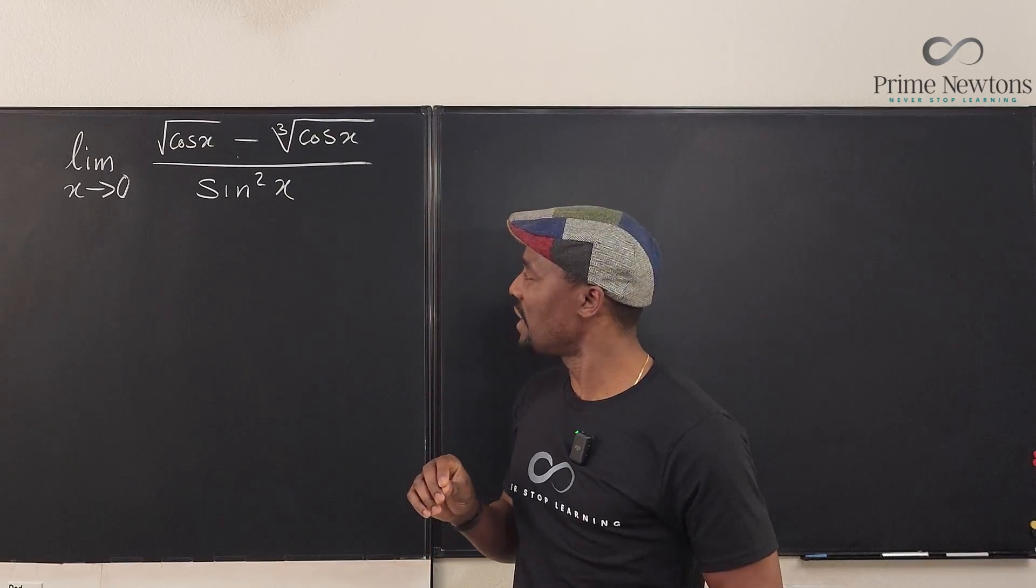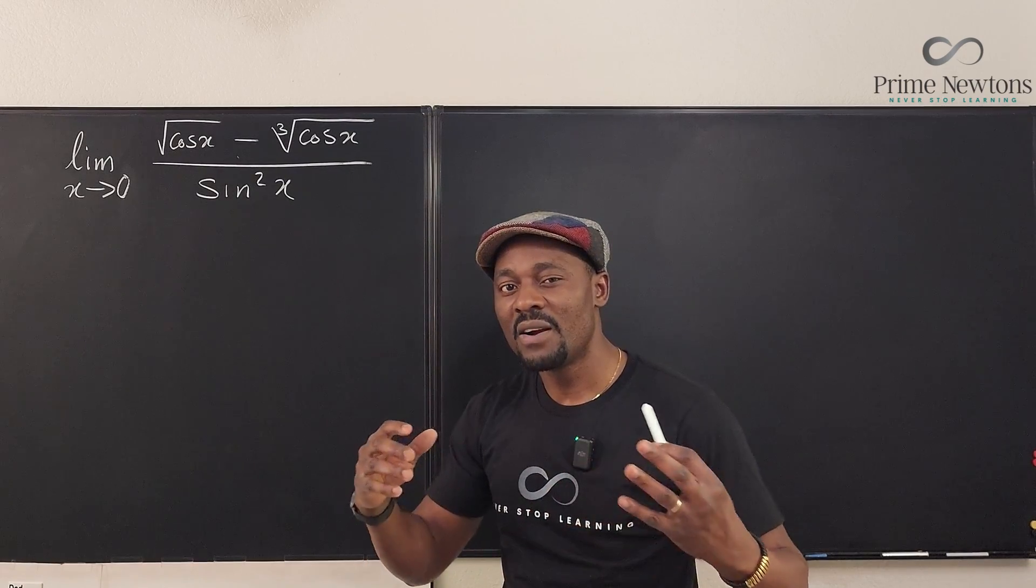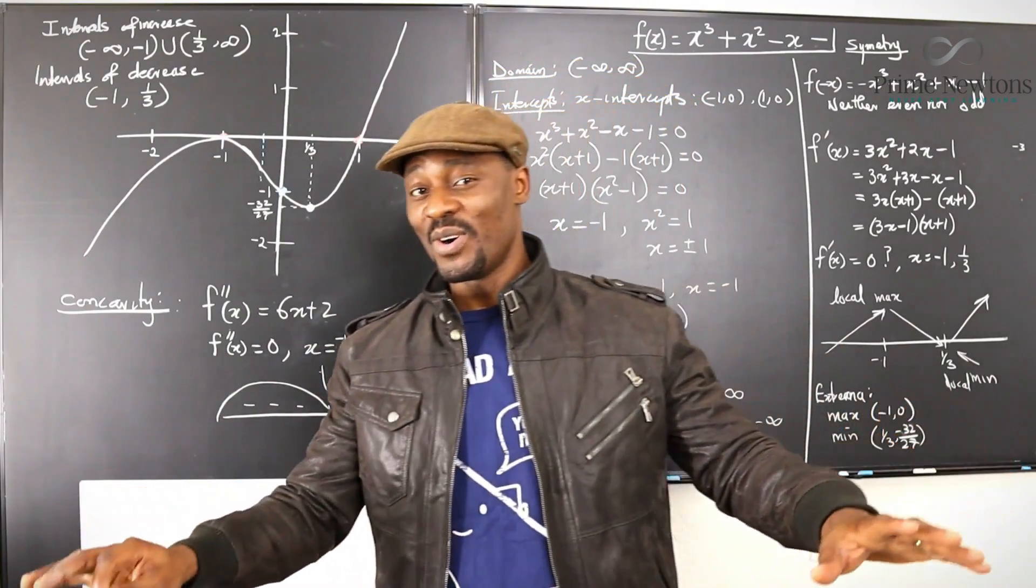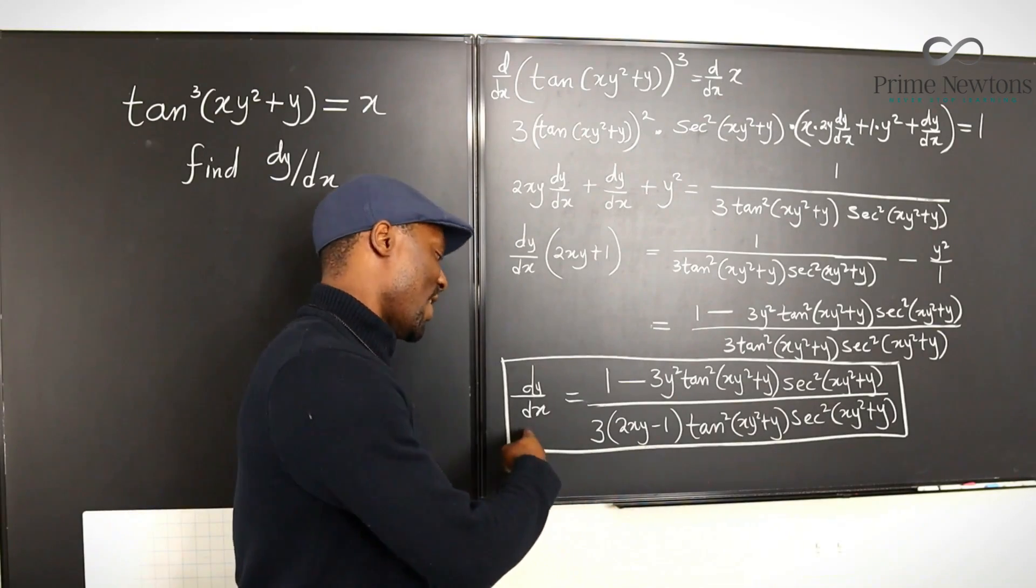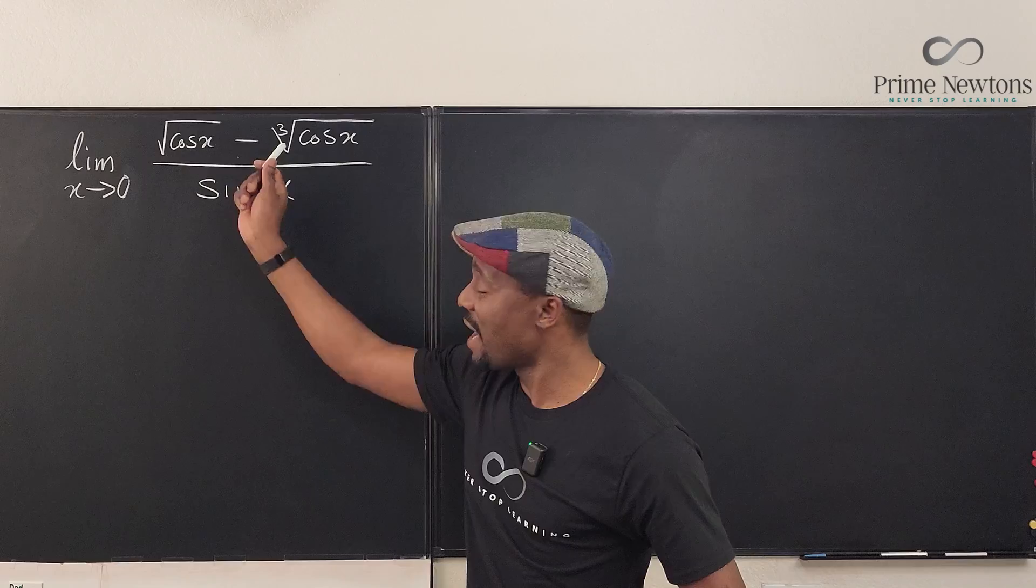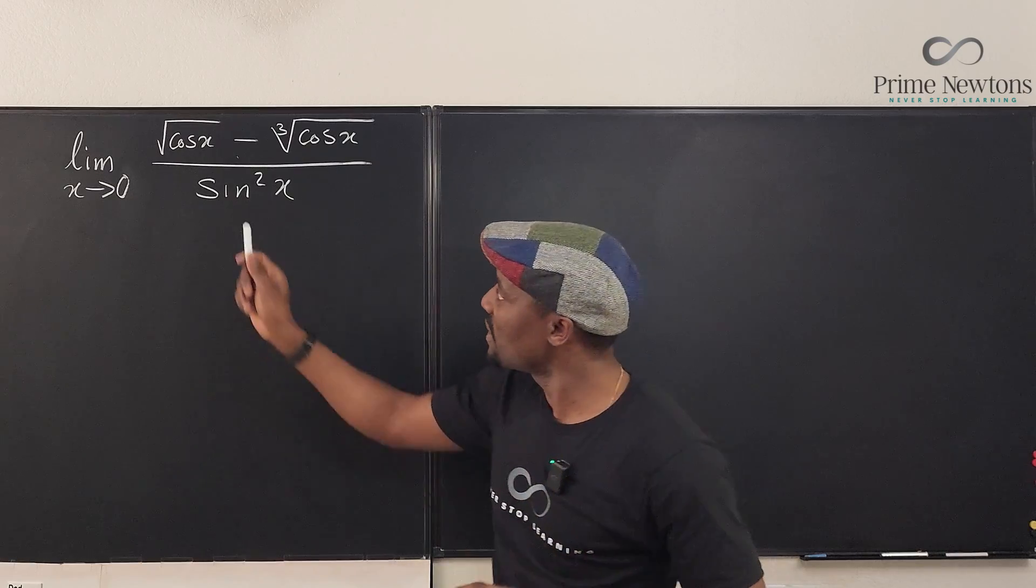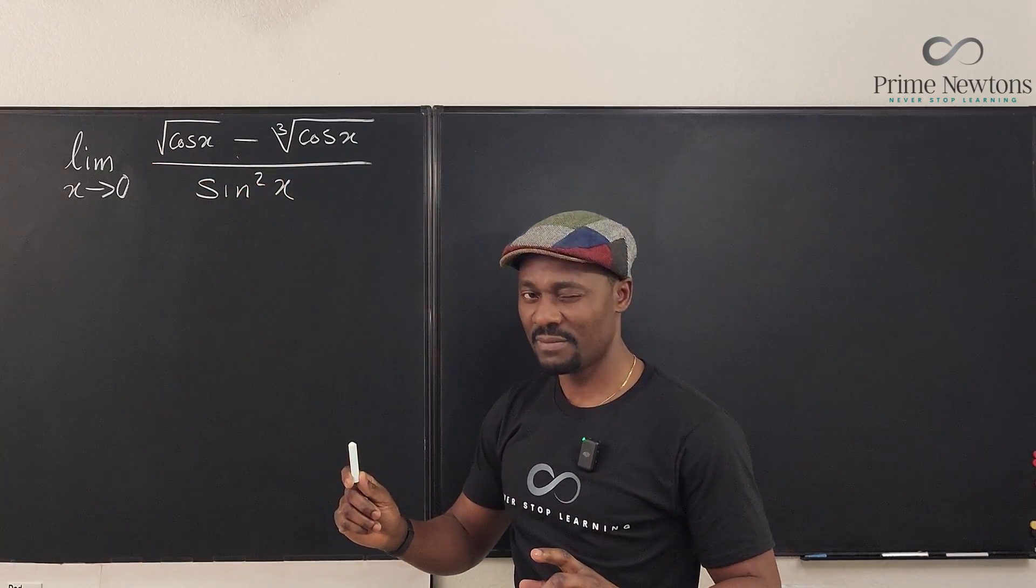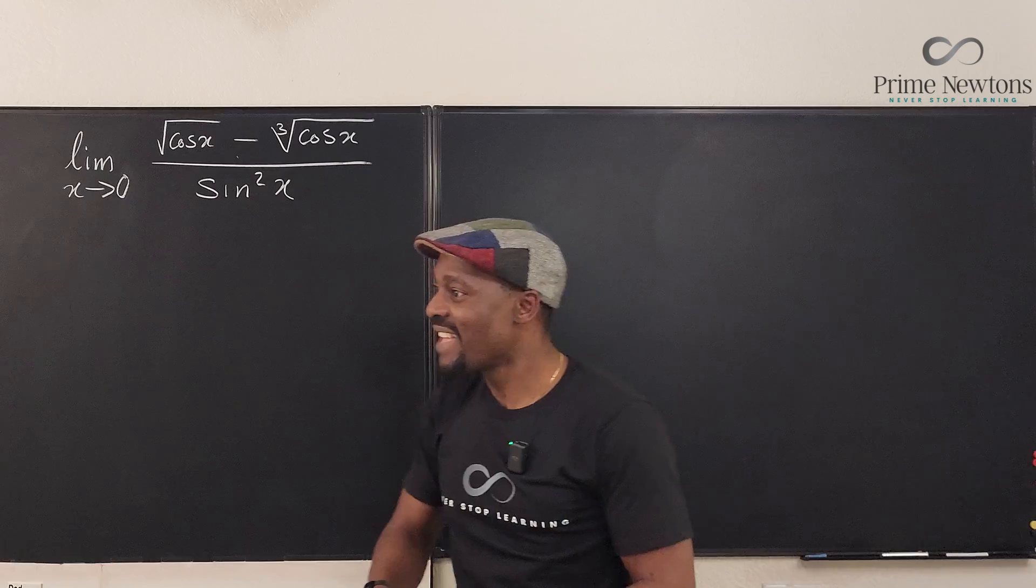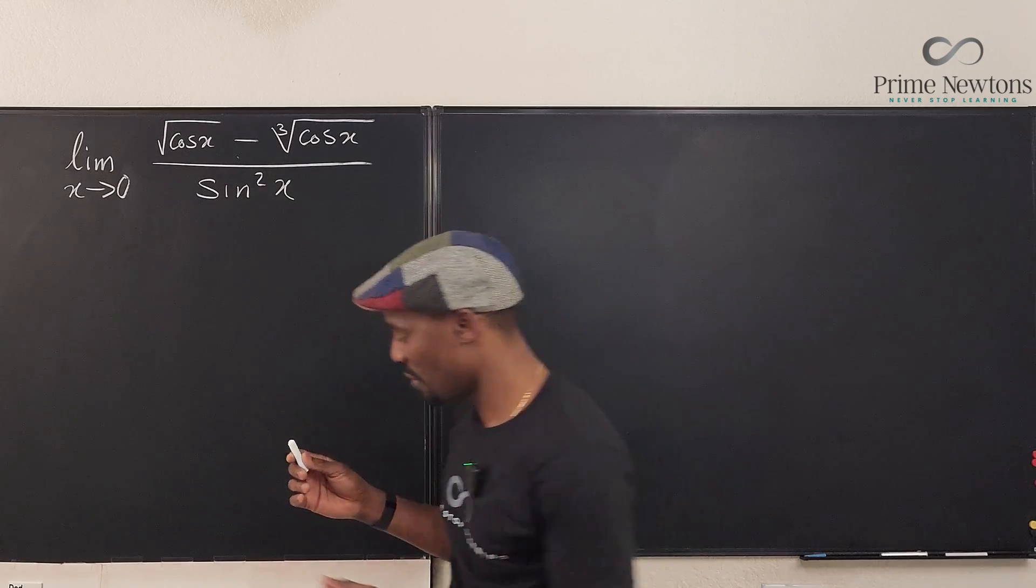But the problem might be what kind of algebra to do because this is trig. But see, we're going to take it away from the trig world into the variable world of u. So I'm going to find an appropriate substitution to get rid of these radicals. I know this is a square root and this is a cube root. What combines square and cube? It is the sixth power. So I'm going to find a variable raised to the sixth power and say that that is my cosine of x because that's where the trouble is.